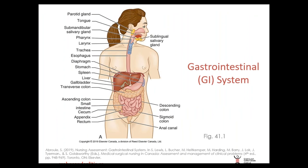We'll briefly go over the gastrointestinal system, also called the digestive system or GI system. We take in food through our mouths, it gets transported to our stomachs by our esophagus, and the acids in the stomach start to break down the foods we eat. Then food travels to the small intestine — about 15 feet long — whose job is to absorb nutrients. When inflammatory bowel disease is active in this area and the tissues are inflamed and damaged, nutritional deficiencies can occur.